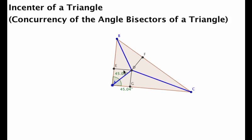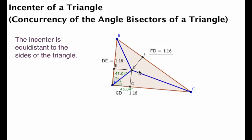Well, what's the relationship between each one of these line segments? If we measure them, we see that each one of these line segments is the same length. In other words, D, the incenter, is equidistant from each one of the sides.